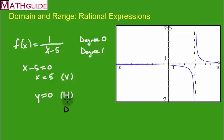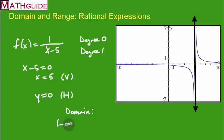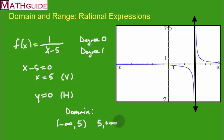When we calculate the domain, we're looking for the x values. This curve has two branches — it's discontinuous. The left branch goes from negative infinity and approaches 5 but is never equal to it. The right branch starts just past 5, moving away toward positive infinity. We combine these with a union sign to write the domain in interval notation.